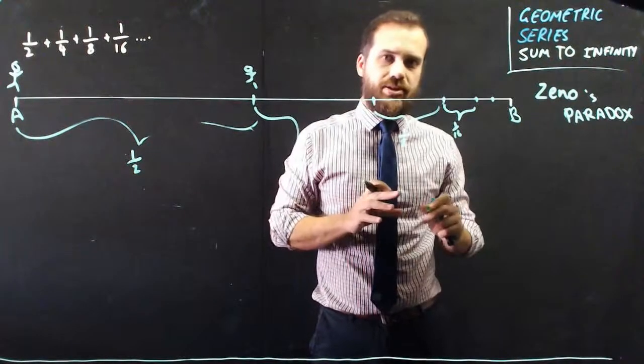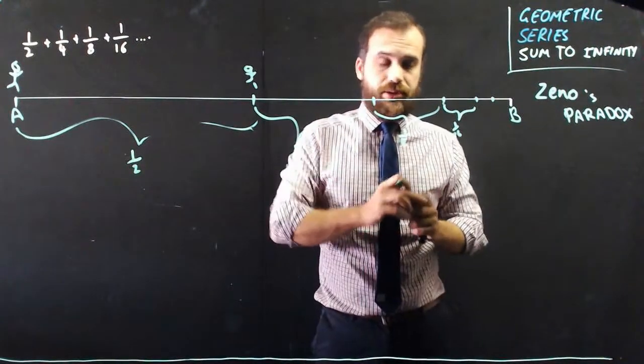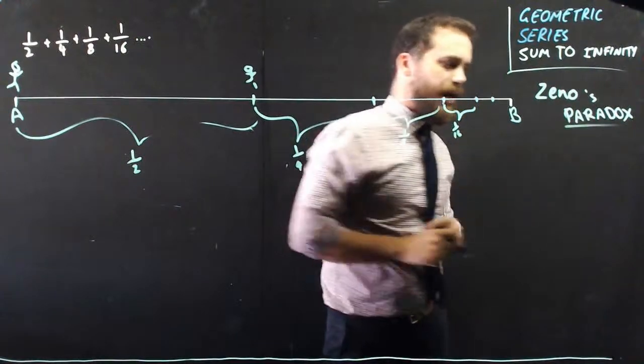So, mathematically, it didn't make sense to Zeno, but experimentally, he could always do it. So, that's why it was called a paradox.